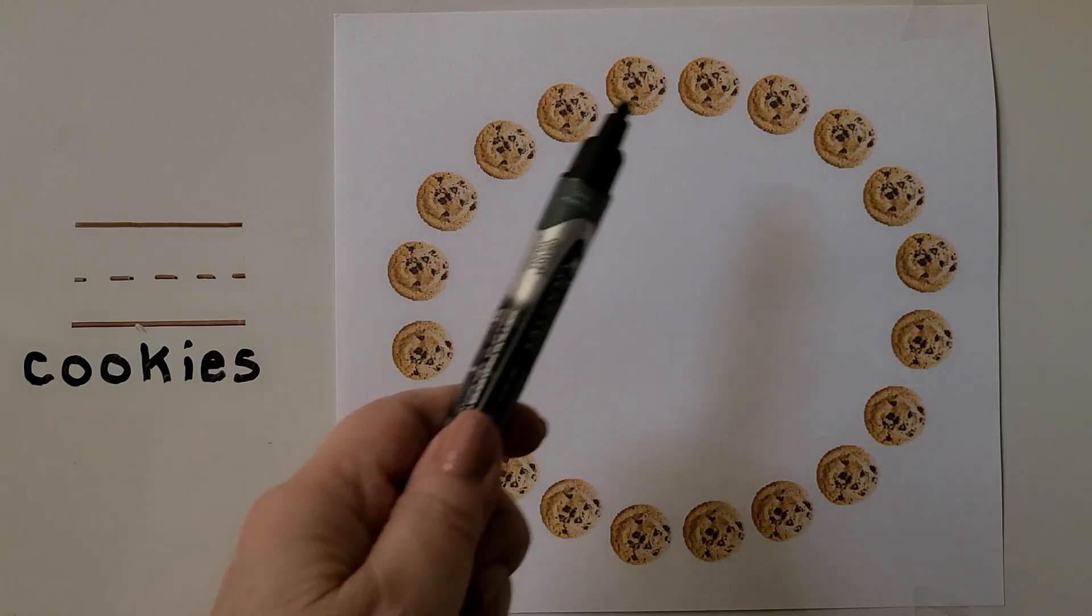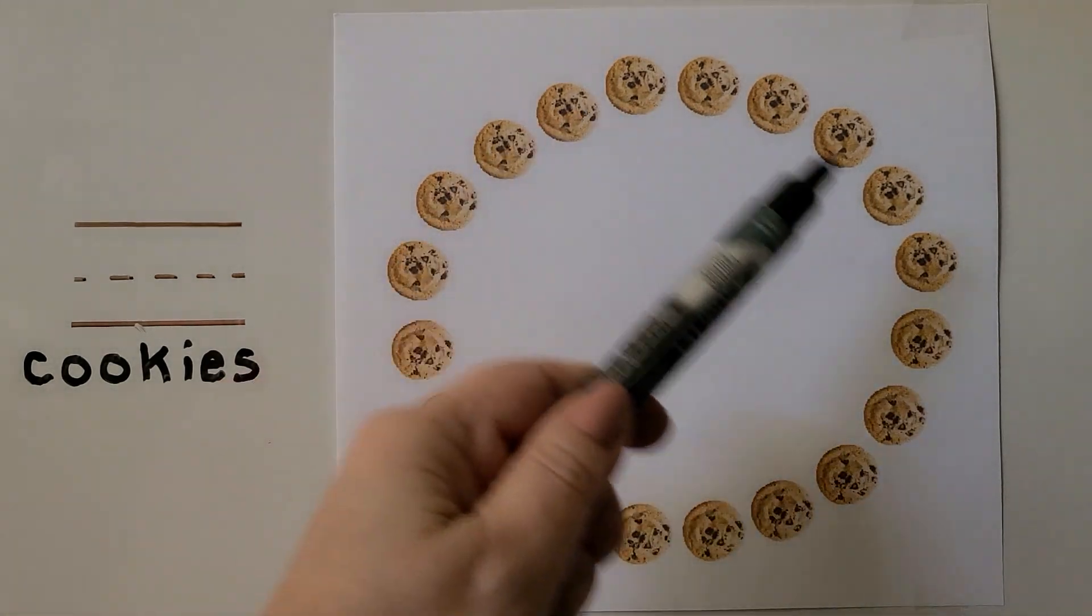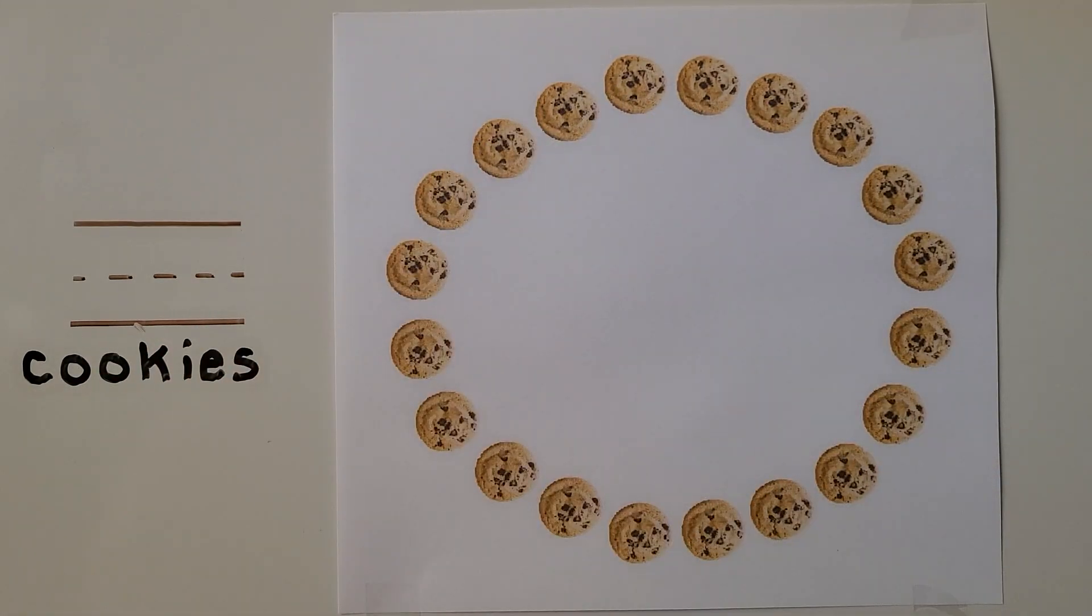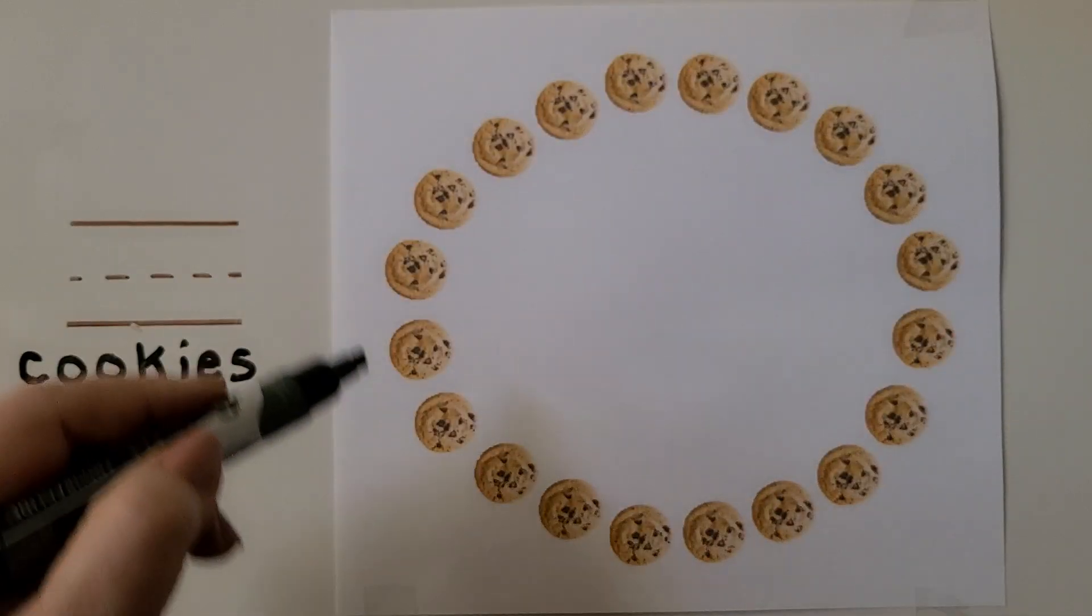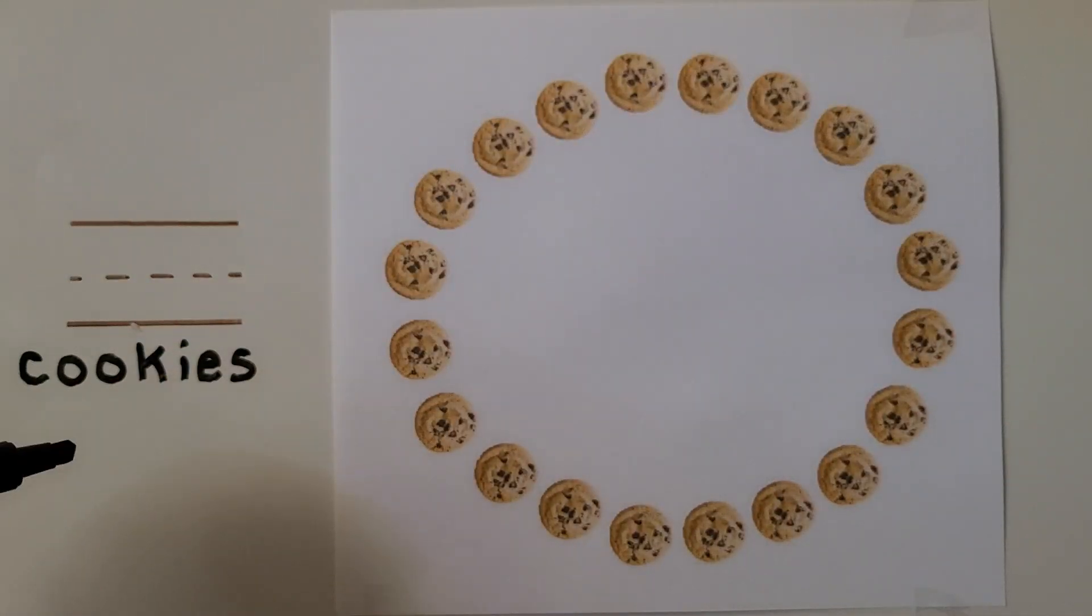Here we have a big circle of cookies. Look at all the chocolate chip cookies. We can count and tell how many cookies we see. We start by putting a dot by the first cookie we're going to count. Then we keep counting around the circle while marking each cookie with a dot. The dots will help us know we already counted that cookie. We can start anywhere on the circle as long as we put a dot where we start.